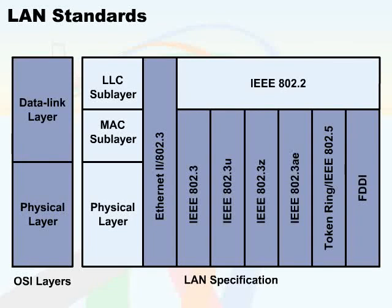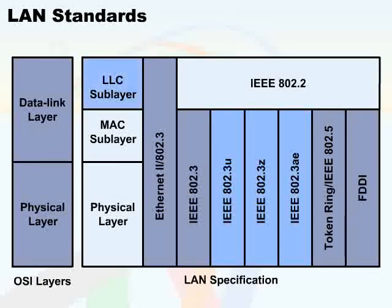This is where the standards fit in. LLC is used predominantly with all of the latest and greatest Ethernet specifications. When dealing with fast Ethernet, gigabit, or 10G Ethernet, we always take advantage of the LLC sublayer and IEEE 802.2. This was one of the many standards approved by the IEEE.